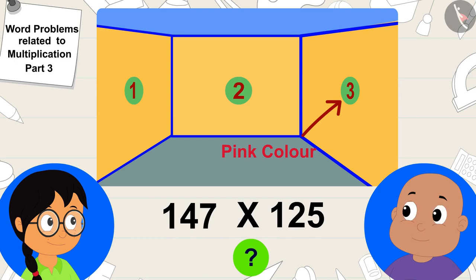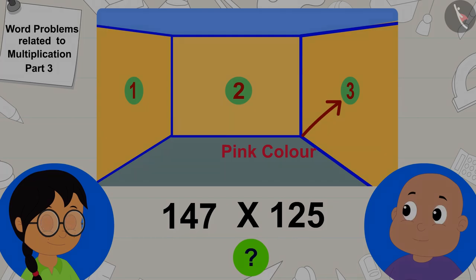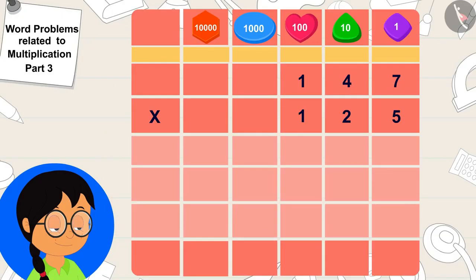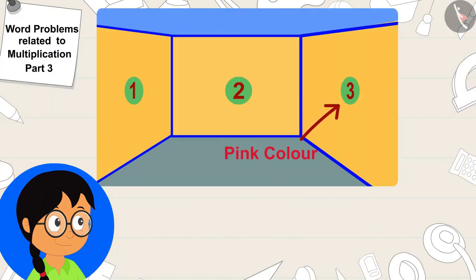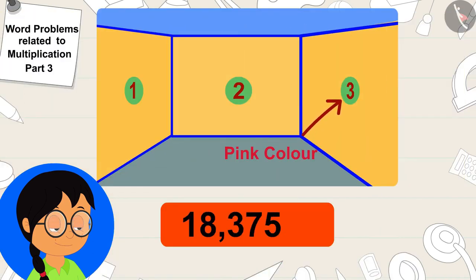Meenu quickly found the answer by multiplying it this way. It will take 18,375 rupees to paint this wall, Meenu told Bablu.